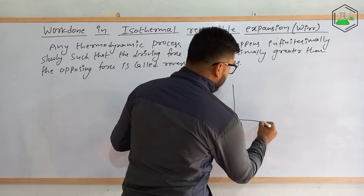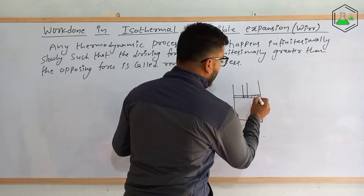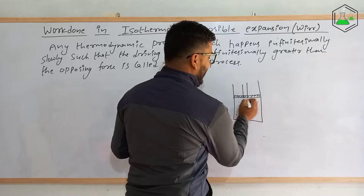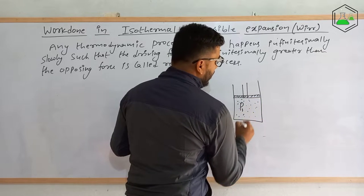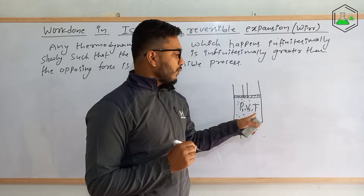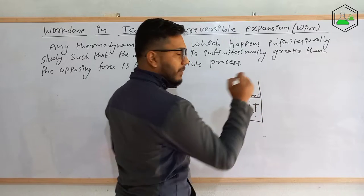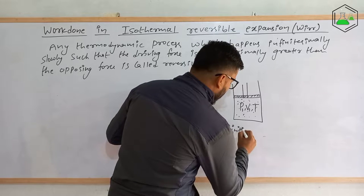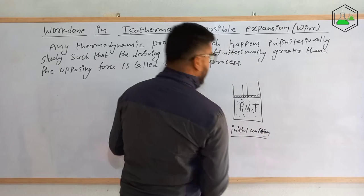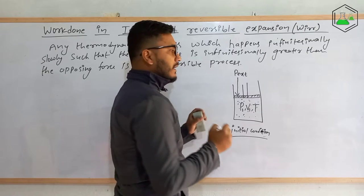Now let's make a consideration. Suppose there is a cylinder and this is the piston — a weightless and frictionless piston. And there is an ideal gas in it. We are considering ideal gas, not a real gas, whose pressure is P1, volume is V1, and temperature is T. This is isothermal expansion so T will not change. This is the initial condition or initial state. And the external pressure in this condition is P_ext.